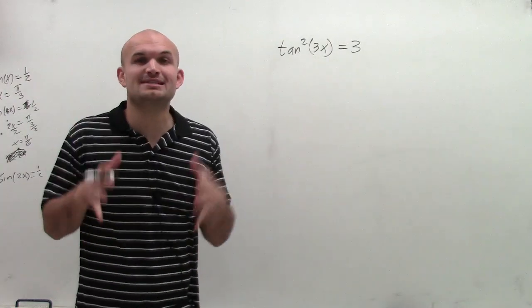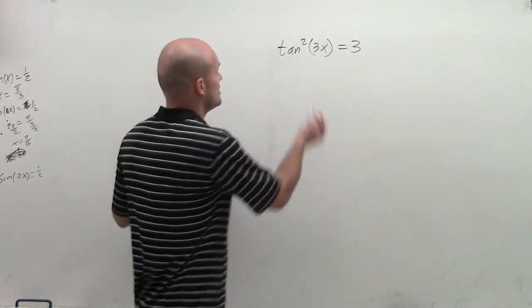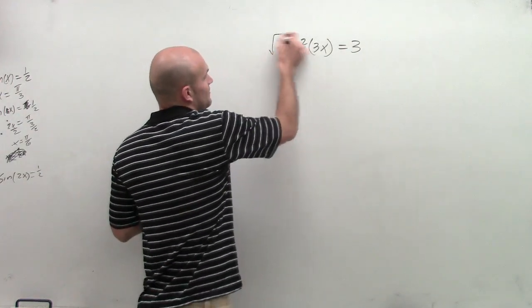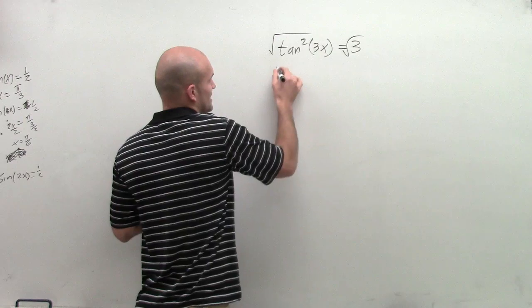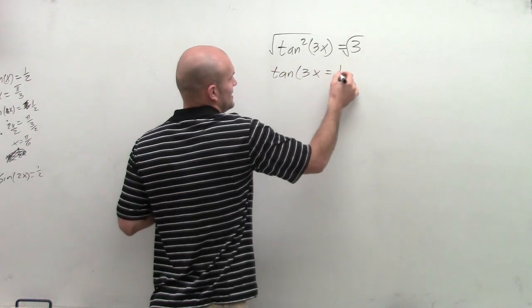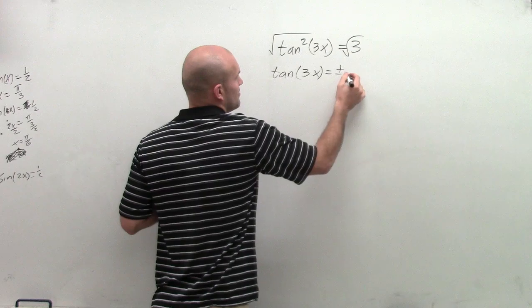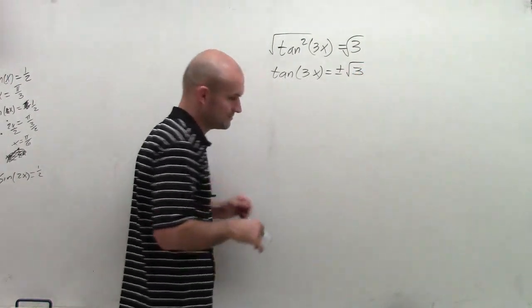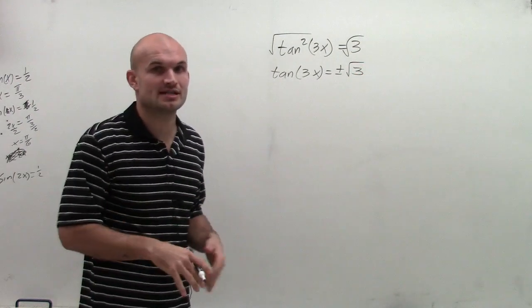So the first thing I need to do is remember, you need to isolate your trigonometric function. Therefore, I need to undo the squaring. So I'm going to take the square root of both sides. Therefore, I get the tangent of 3x equals plus or minus the square root of 3. You got to make sure you remember to always introduce that plus or minus.